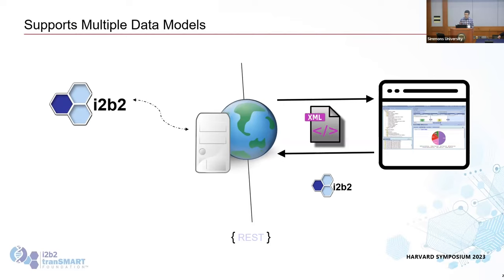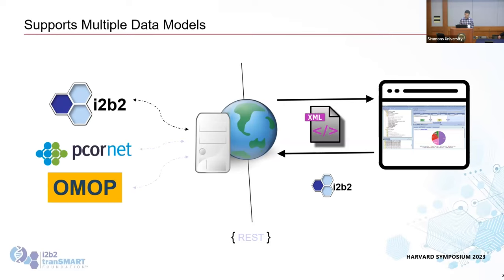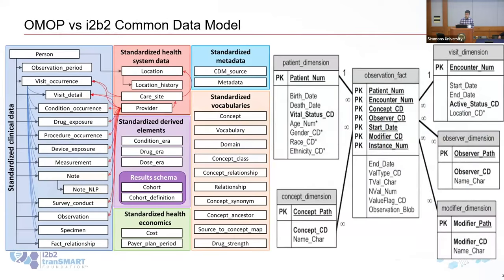Conceptually, i2b2 translates those XML calls into SQL queries and talks to a database with a star schema data structure. So what if you changed that piece out — instead of generating SQL queries on a star schema, it generates SQL queries on the OMOP schema or the CORNET schema? There is pioneering work that Lori Phillips led about five years ago that demonstrated this could work, and we have pilots on both.